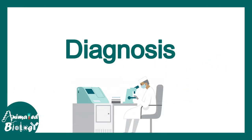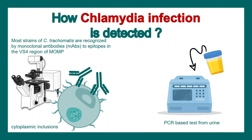Regarding diagnosis, most strains of Chlamydia trachomatis can be detected with monoclonal antibodies such as VS4 or MOMP antibodies. ELISA-based tests can be used to detect them. PCR-based diagnosis, though expensive, can be a more sensitive and higher-throughput diagnostic method.